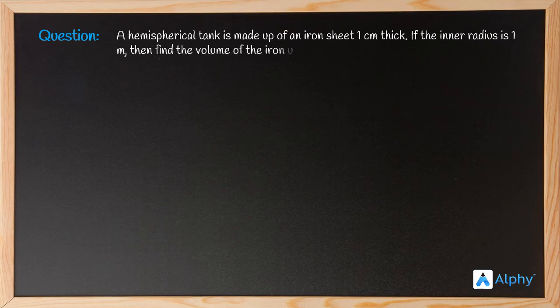So in this question we aren't supposed to find out the volume of the hemispherical tank. Instead, we have to calculate the volume of the iron used to make that tank. We are given the thickness and the inner radius, so let us see the solution to this question.